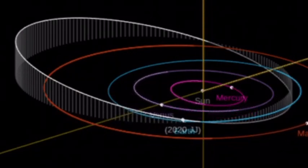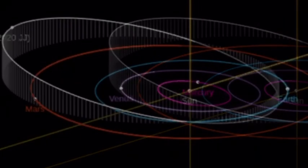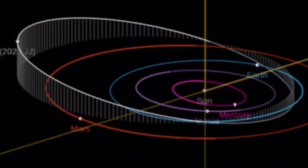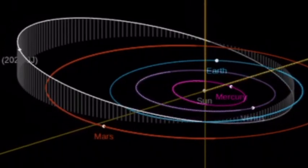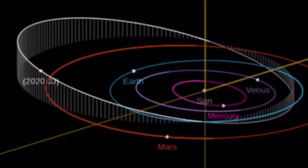More like above us, actually. Previously unseen asteroid the size of a truck flew about 4,350 miles (7,000 kilometers) over the Pacific Ocean on Monday, making it one of the closest passes by our planet on record.